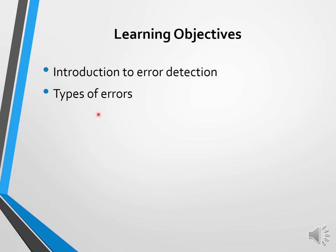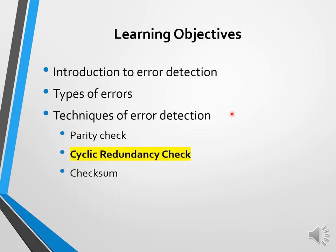Whenever an electromagnetic signal flows from one point to another, it is subject to unpredictable interference from heat, magnetism, and other forms of electricity. Such interference can change the shape or timing of the signal. If the signal is carrying encoded binary data, such changes can alter the meaning of the data. We studied the types of errors: single bit errors and burst errors, and after that, the techniques of error detection.